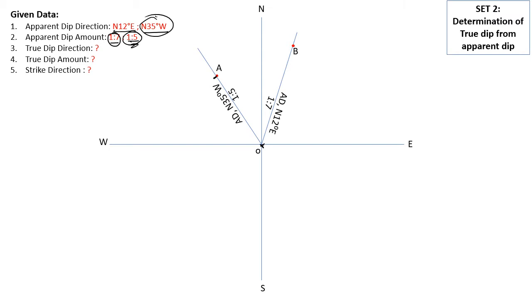Now what I will do is join these two points A and B with a straight line. Parallelly, I will shift this line to pass through point O as well. These lines should be parallel to each other.